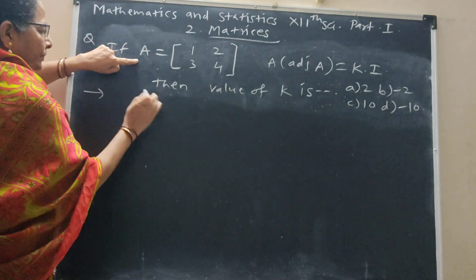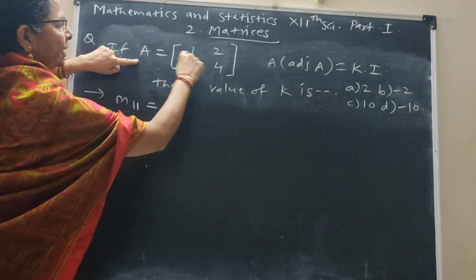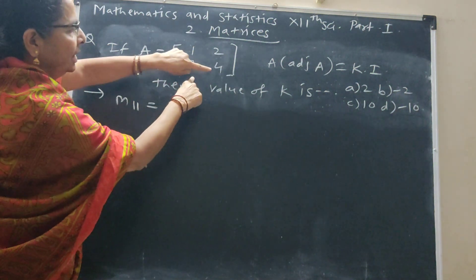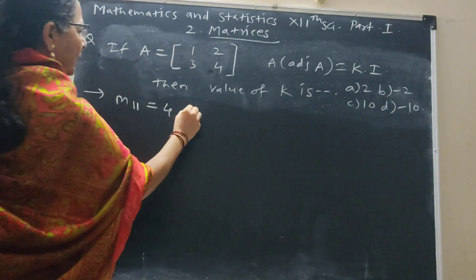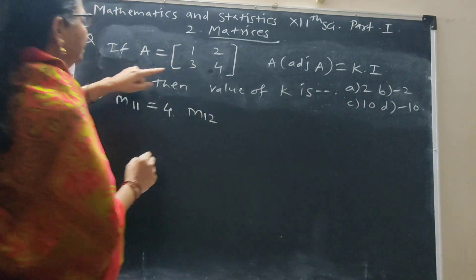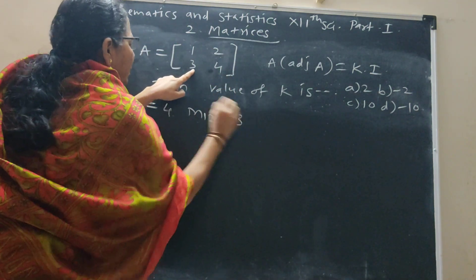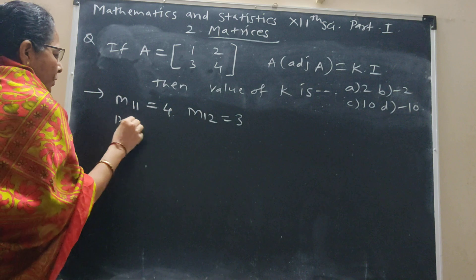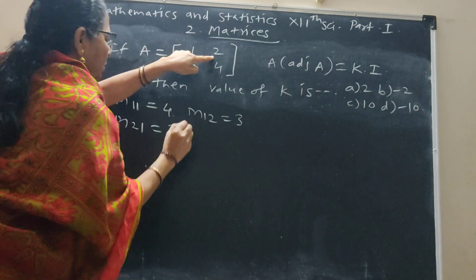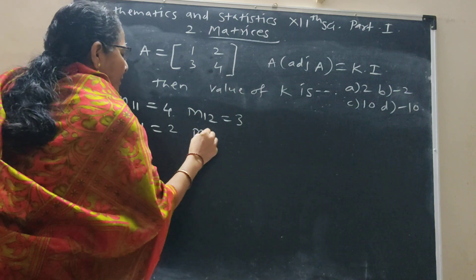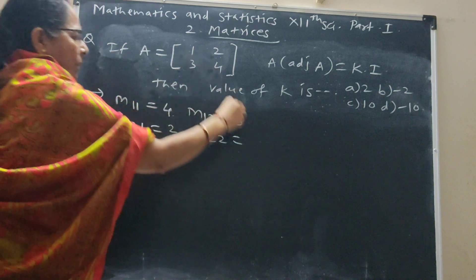So, from this determinant, M_1,1, delete this row and column, and this is the element 4. Then M_1,2, delete this row and column, and this is the element 3. M_2,1, delete this row and column, element 2. Then M_2,2, second row, second column, element 1.